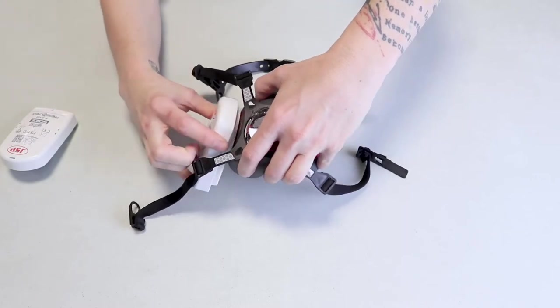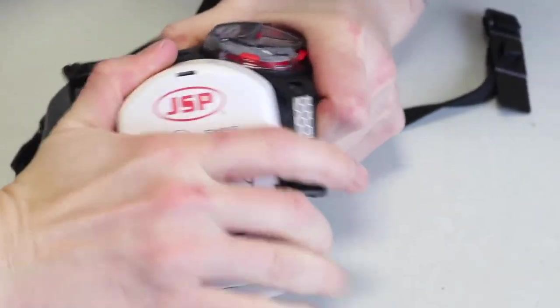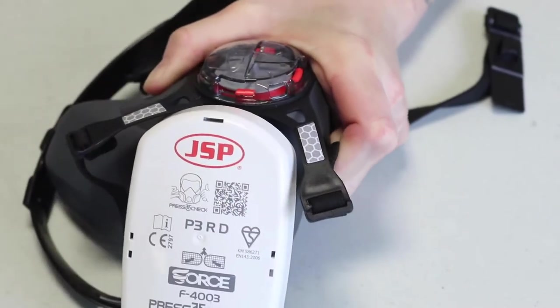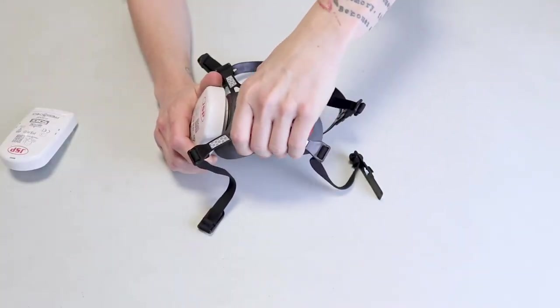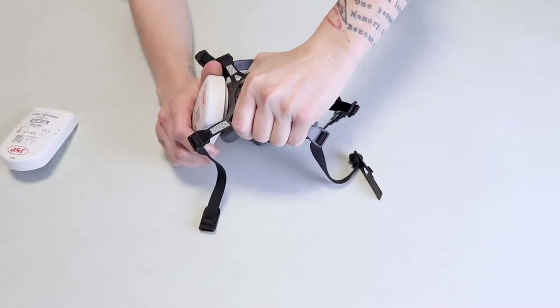So we just pop it in and twist. This can be stiff, but I recommend that you handle and grip the JSP mask like so.